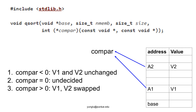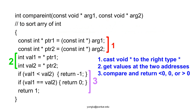C provides the qsort function; however, C does not provide the comparison function because qsort can sort arrays of any type. Programmers have to provide the comparison function. A comparison function should have three steps. The first step casts the two arguments into the right type. Please remember that these arguments are addresses.